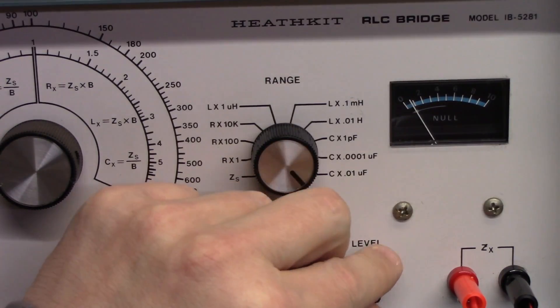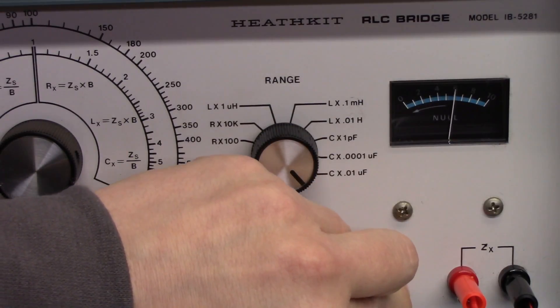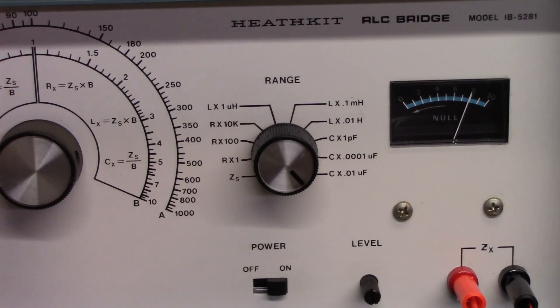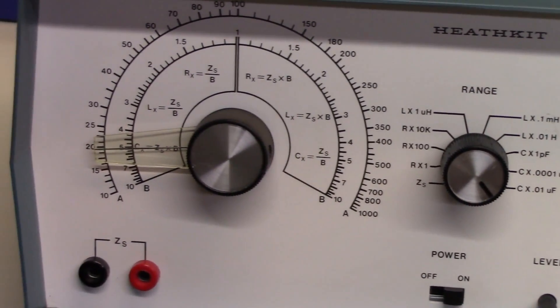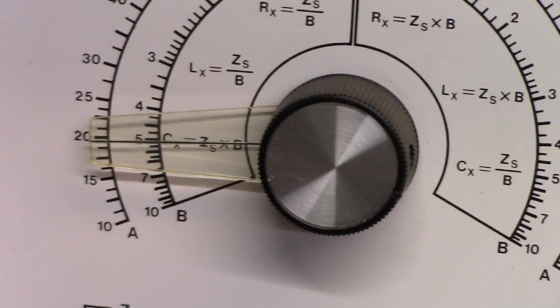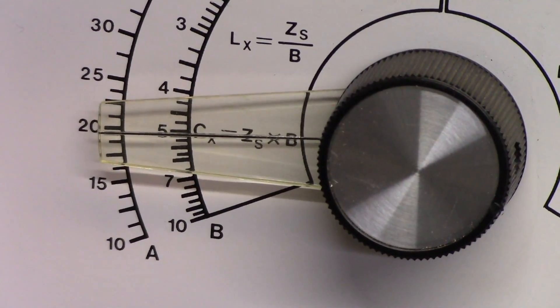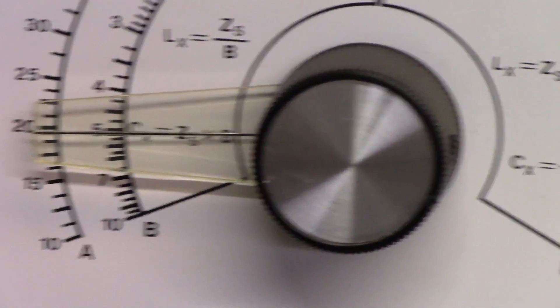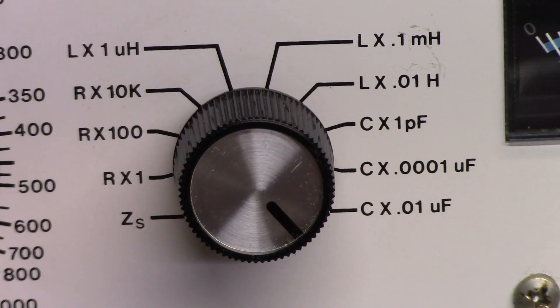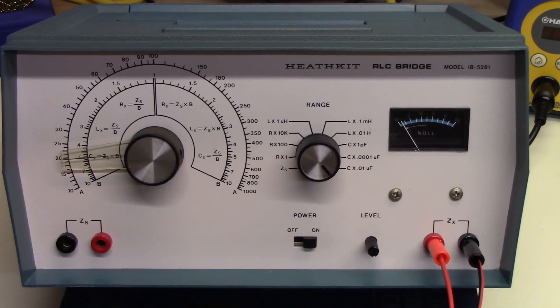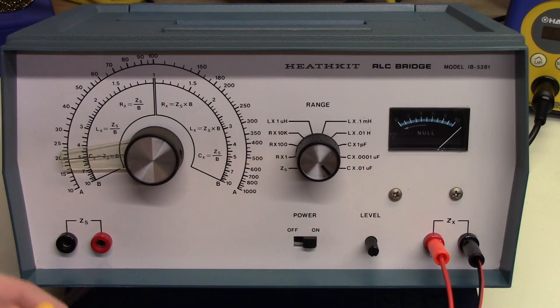Next thing that you do is you readjust the level so that you are able to get better precision on finding the null. So we're going to adjust this a little bit more. And we've gone past it, so I'm going to go back down. The null is right about there. And now if we pan back over here and zoom in, you can see that we've corrected the first measurement. And it's now right around 20, just shy of 20. And so when you multiply that by 0.01 µF, you get 0.2 µF, which is exactly what the capacitor is advertised to be. That's pretty impressive.